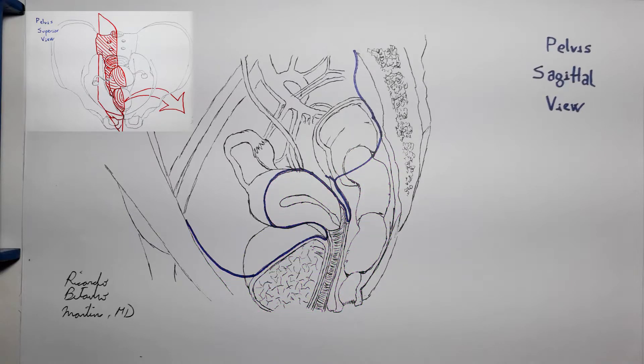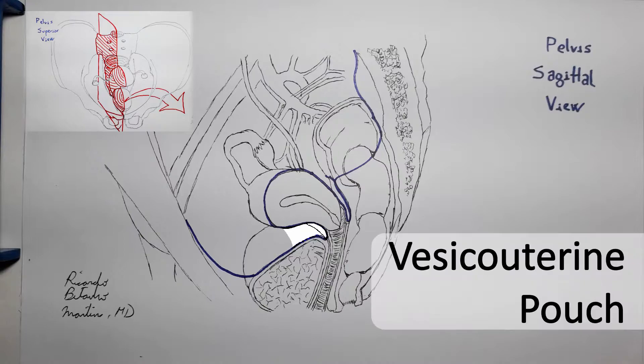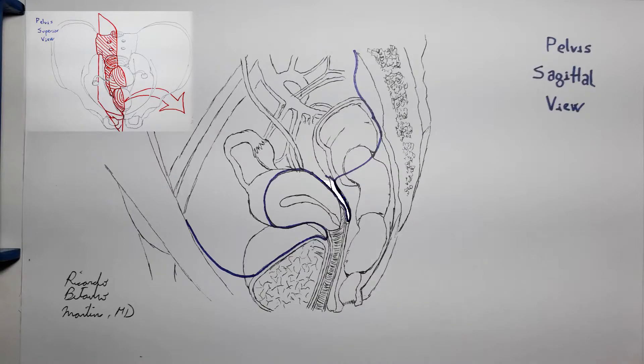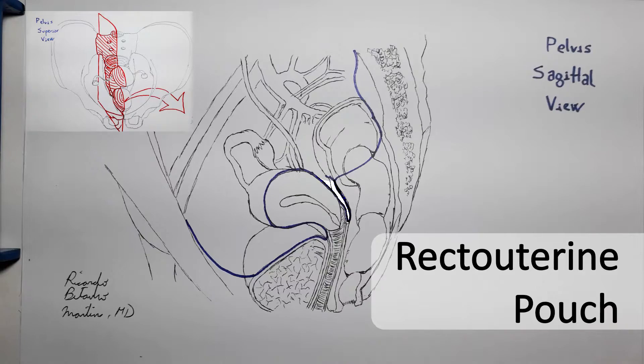the regions between these organs will form small, mostly impermeable pouches, or sacs, extending downwards from the abdomen, where fluids can get pooled. The depression between the bladder and the uterus becomes known as vesico-uterine pouch, and the region between the uterus and the rectum becomes known as the recto-uterine pouch, or pouch of Douglas.